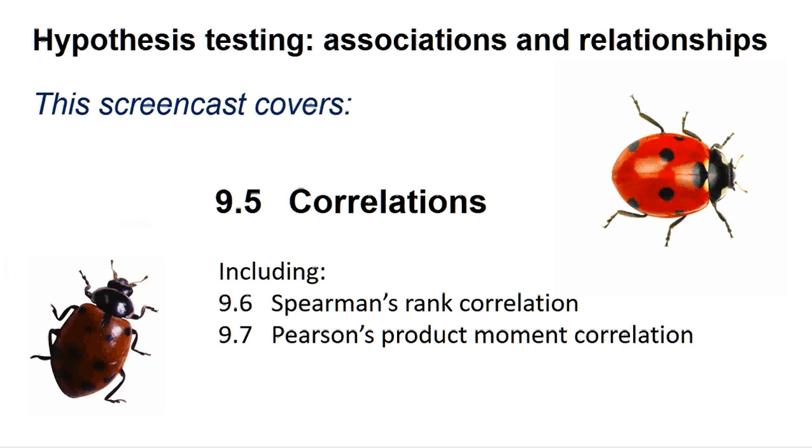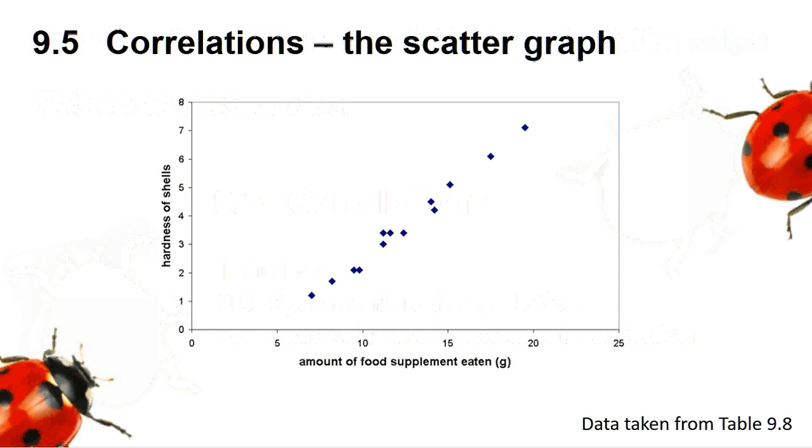Research biologists are always trying to figure out how biological systems function. This path to discovery often starts with an observation that changes in a biological trait may be linked to changes in another trait or an environmental factor. This is often detected by the eye seeing a possible relationship when the data is plotted as a scatter graph.